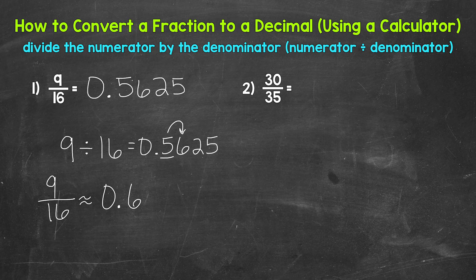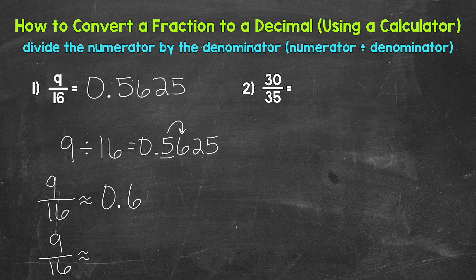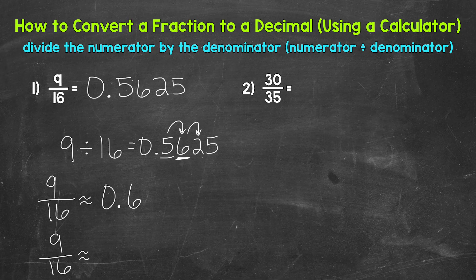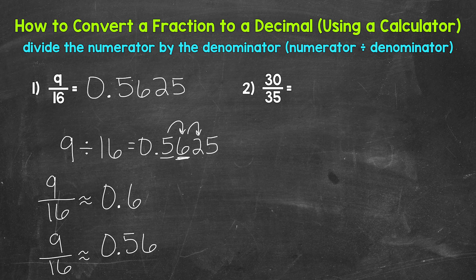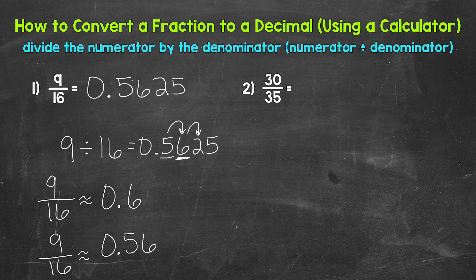Now let's round to the hundredths. So 9 sixteenths is approximately, well, we have a six in the hundredths with a two in the thousandths. So this rounds to 56 hundredths. 9 sixteenths is approximately 56 hundredths. So some different options there as far as how we can write this out.